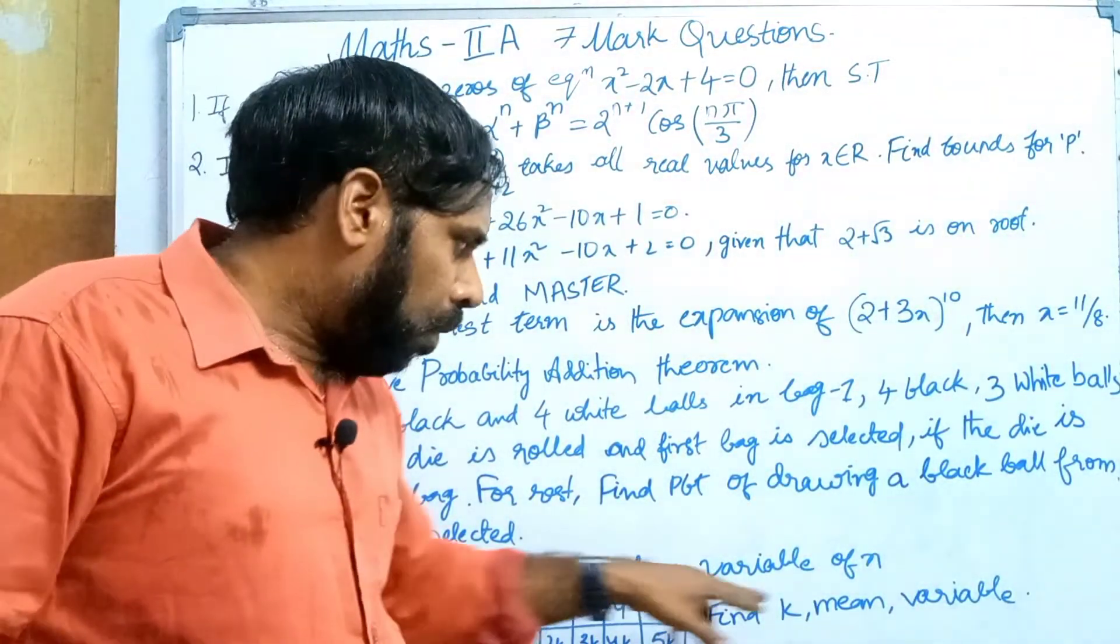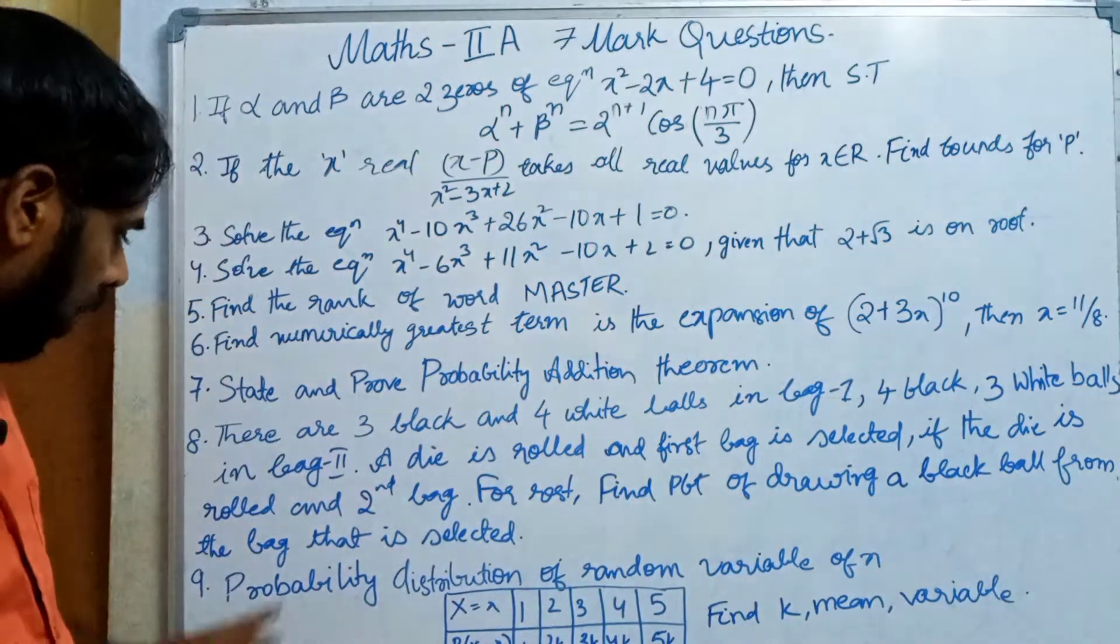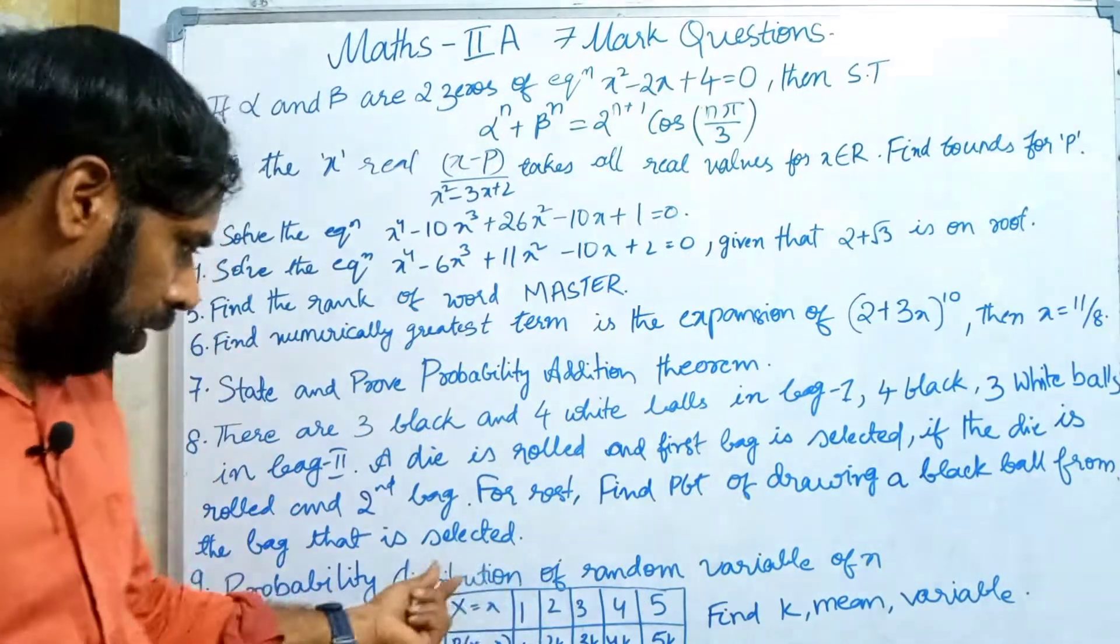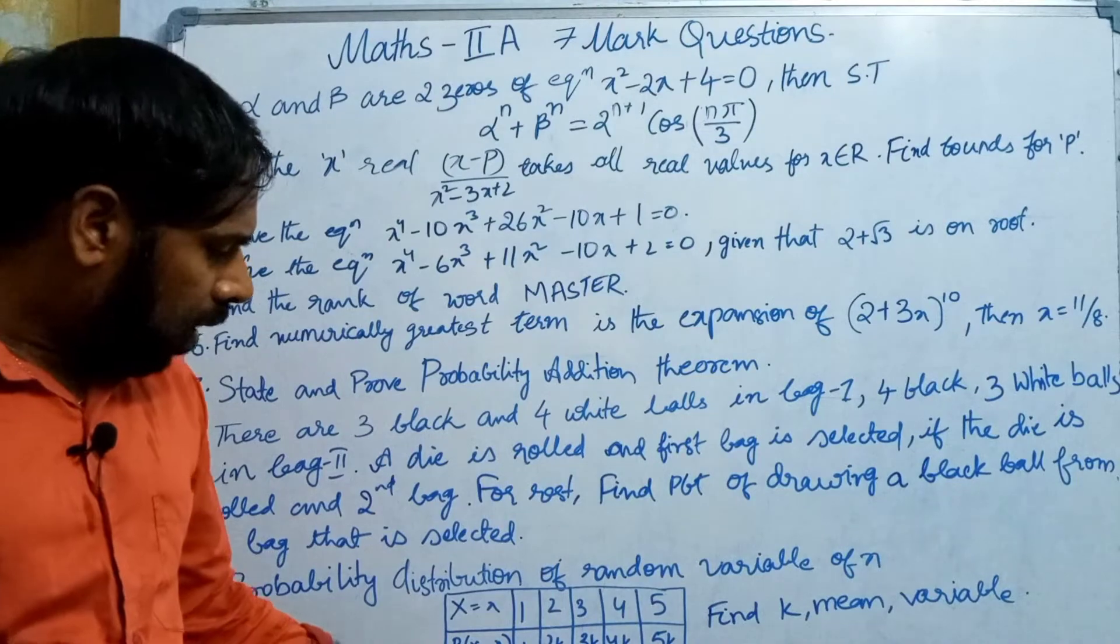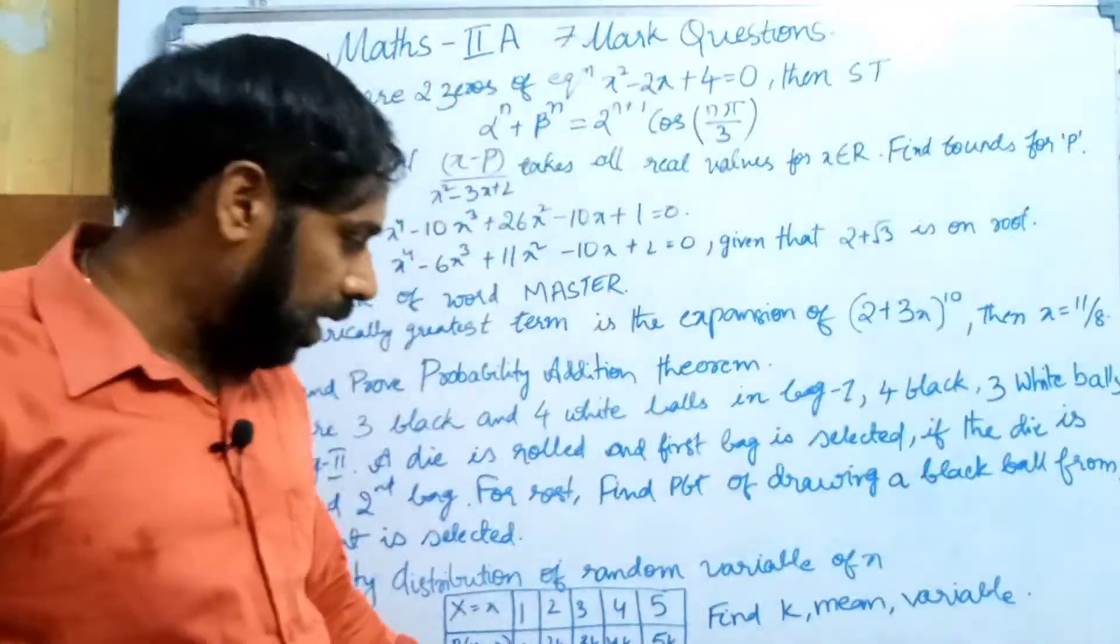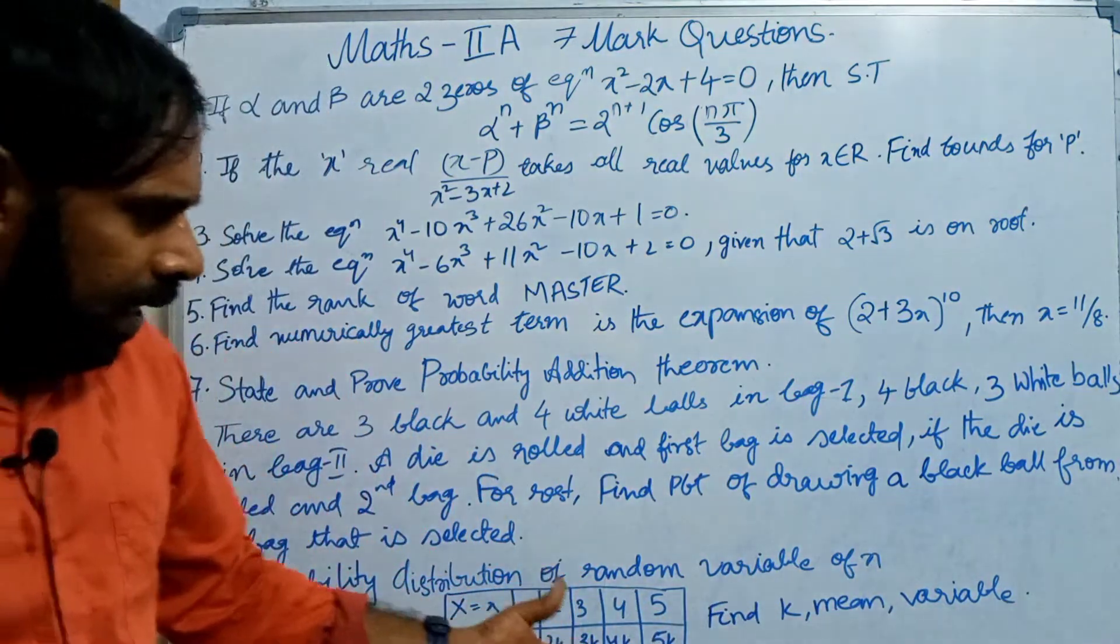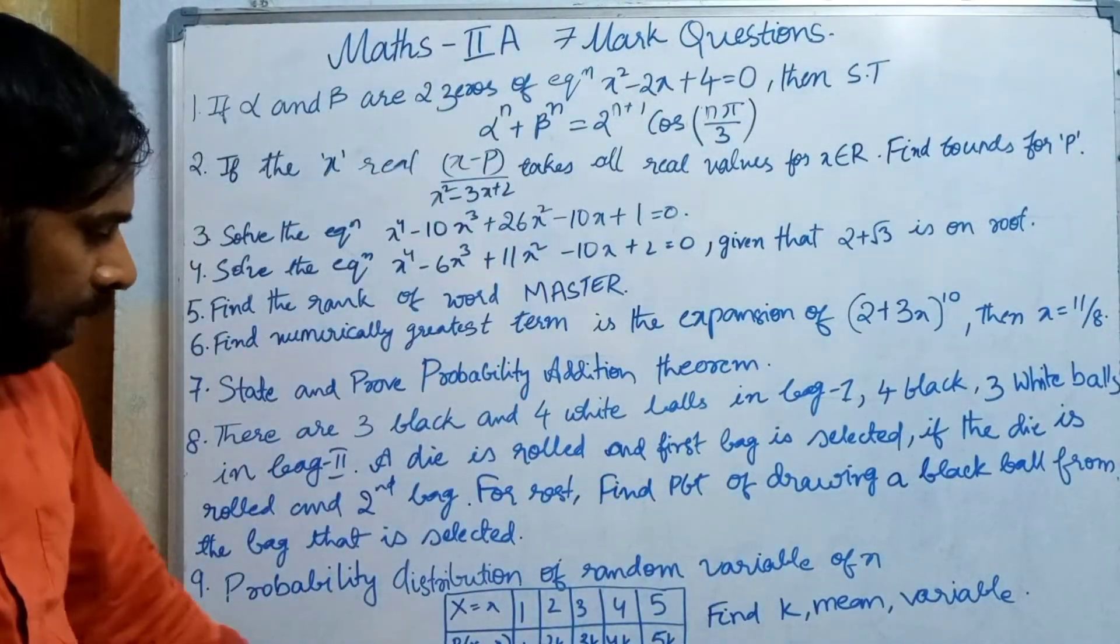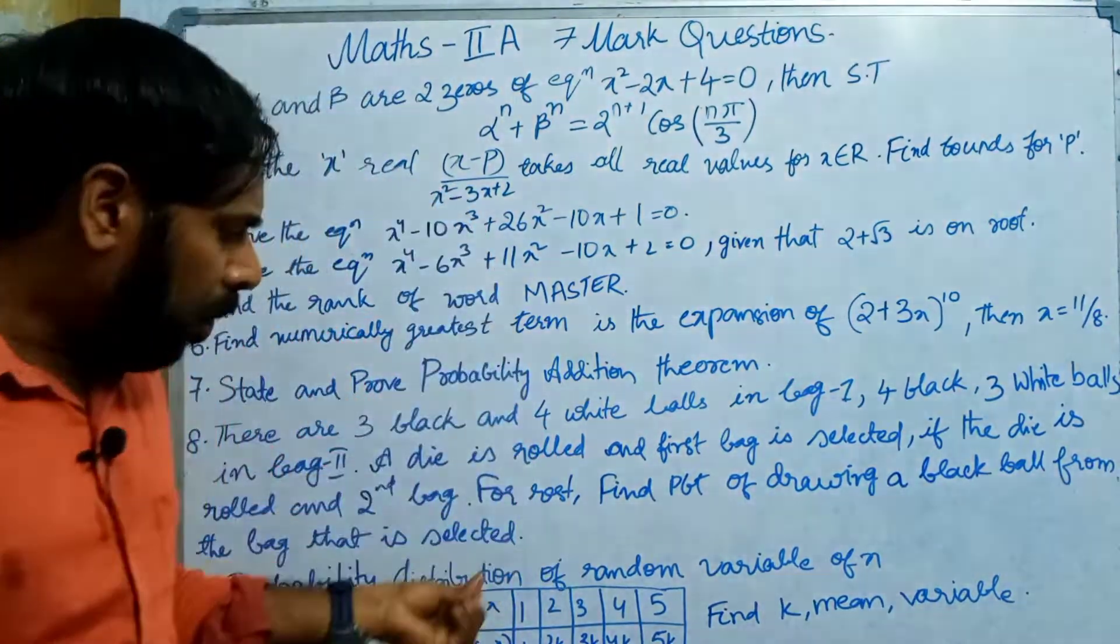Another question: find the constant c if f of x equals c into 2 by 3 whole power x, x equals 1, 2, 3, dot dot dot infinity. This is the probability distribution of a discrete random variable. Find c using the sum of probabilities equals 1.